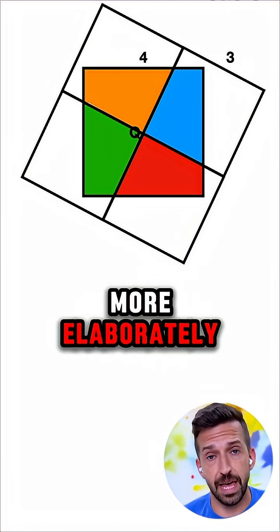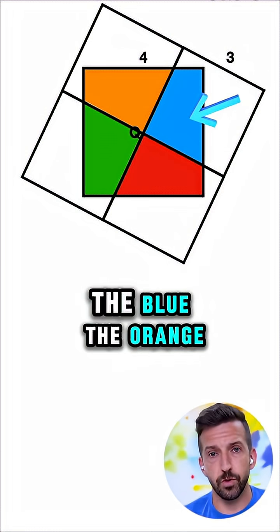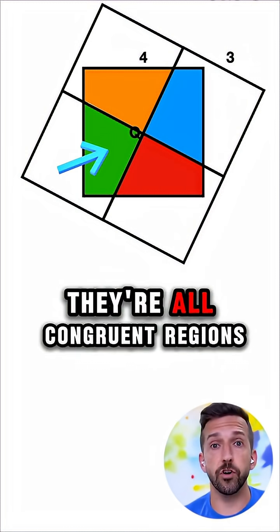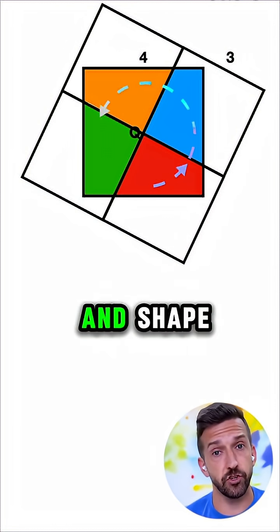Using symmetry arguments, and if you wanted to, you could prove this more elaborately, you could probably see that these 4 shaded regions, the blue, the orange, the red, the green, they're all congruent regions. Now, they're just rotations of one another, but they're the same size and shape.